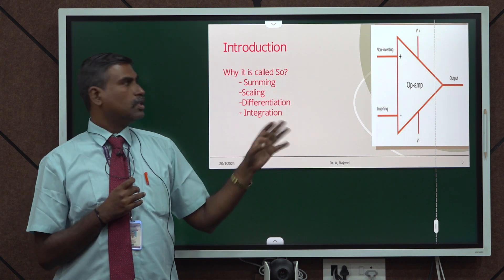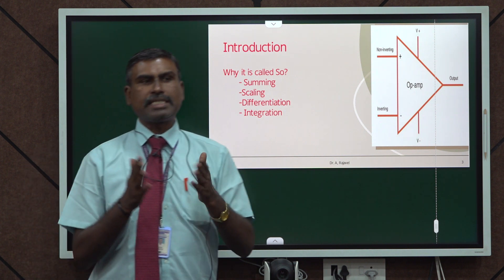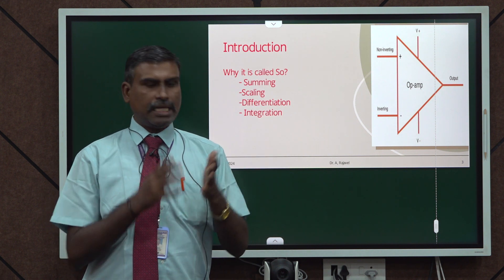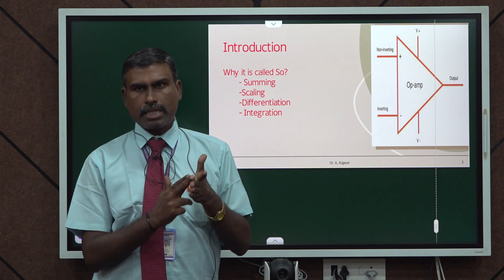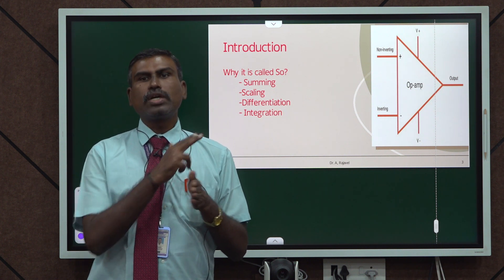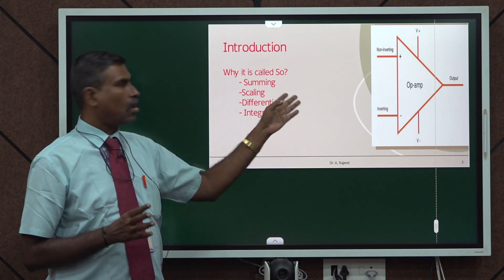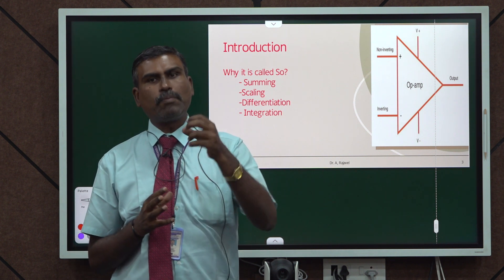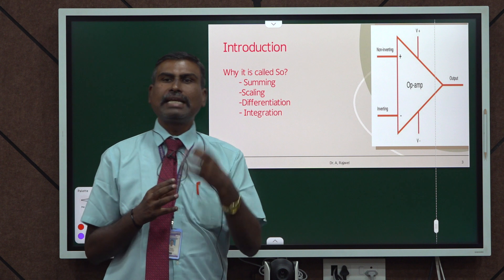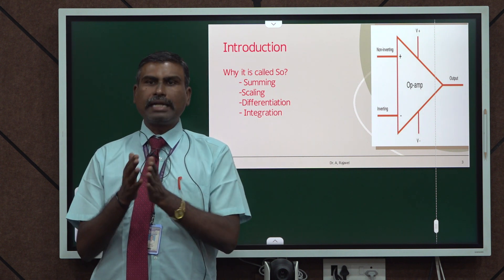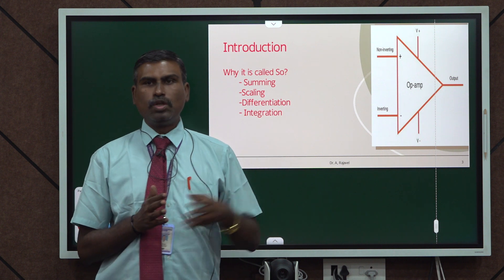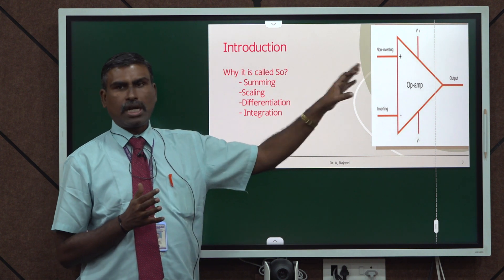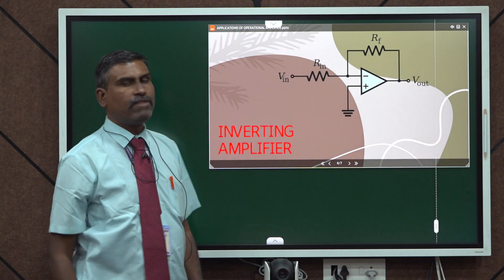Why is this IC called an operational amplifier? An operational amplifier performs all the basic operations like summing, subtraction, comparisons, differentiation, and integration — hence it is called 'operational.' Amplification means it can either boost up a signal or pull it down. For example, if I apply 2 volts it can strengthen the signal to 4 volts or decrease it to 1 volt — hence it is called an amplifier. It performs certain operations as well as scaling operations.